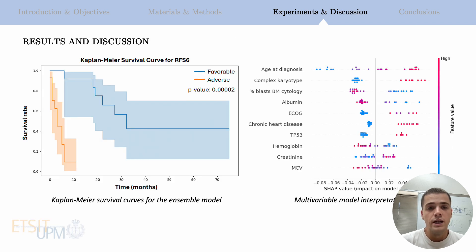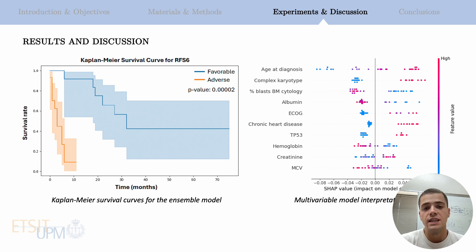Moreover, we evaluated the Kaplan-Meier survival curves, which showed a significant difference between high-risk and low-risk patient groups, with a p-value of 0.00002. This indicated that the ensemble model is highly effective in stratifying patients based on their relapse risk, and clearly demonstrated that the model can be used to identify patients at higher risk of relapse early on.